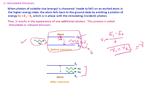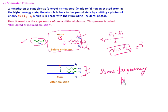One photon comes from the excited atom, and the second photon is the one that induced this excited atom. The frequency is the same for both photons. So in case of stimulated emission we get two photons of the same frequency and in the same phase — this is the key property of stimulated emission. By this way one can say that we have amplified the light.